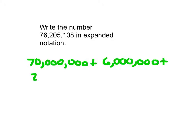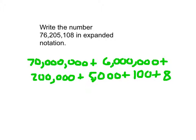Then we have that 2, which is worth 200,000. We have the 5, which is worth 5,000. Plus 100, plus 8.